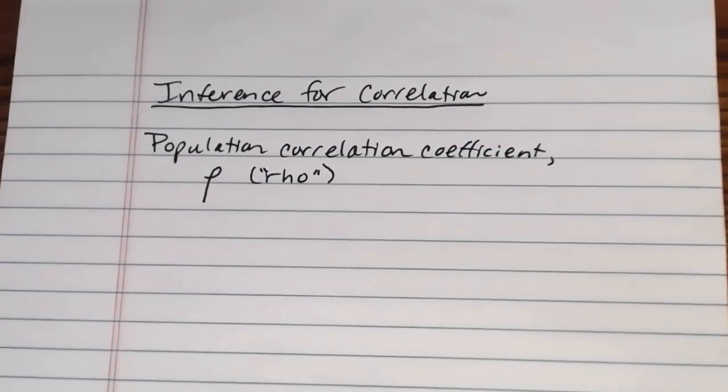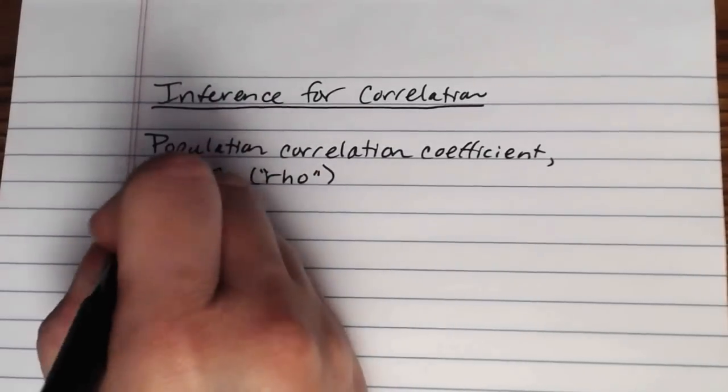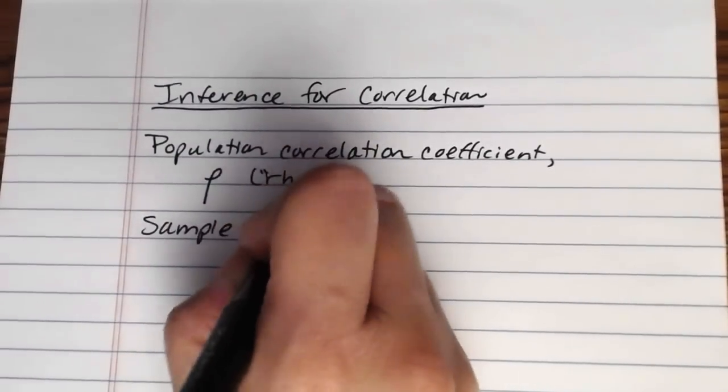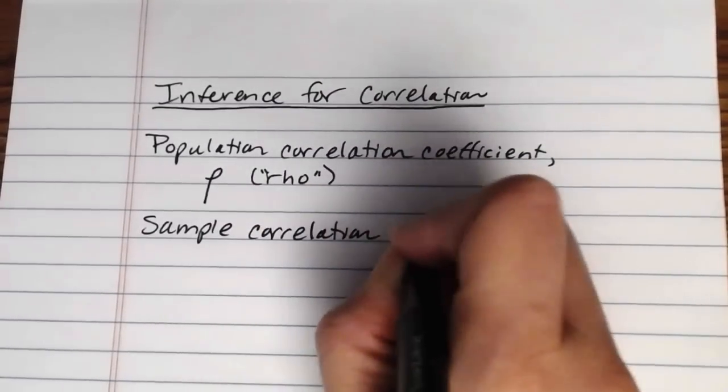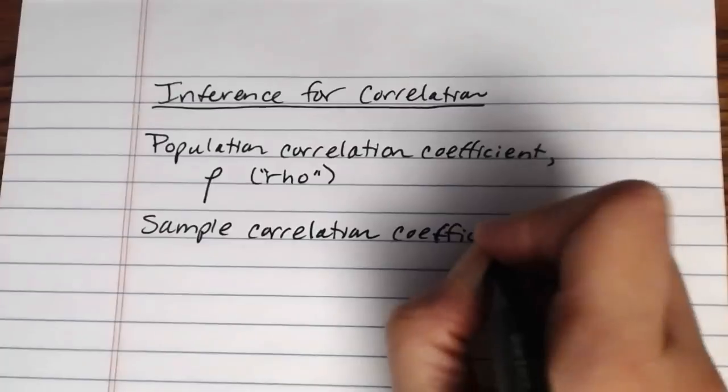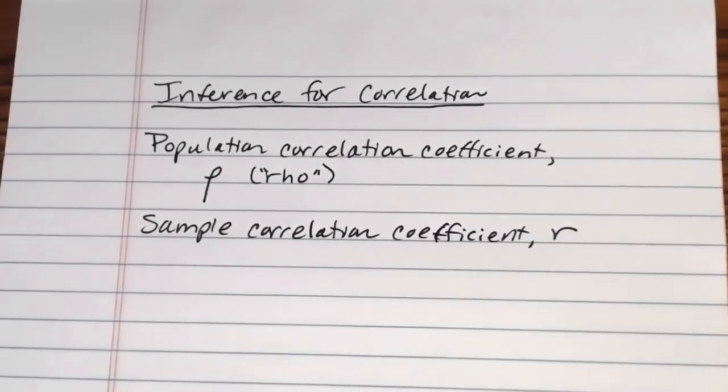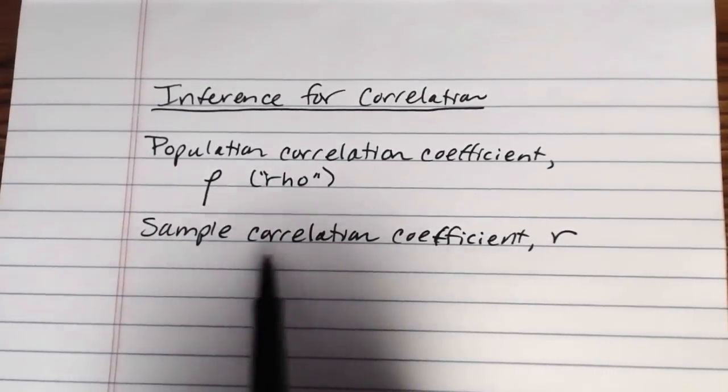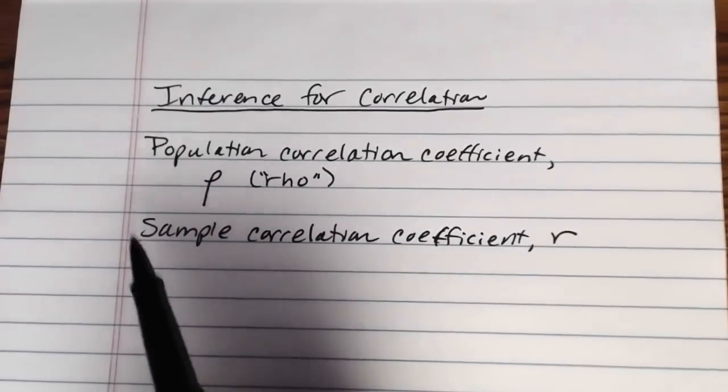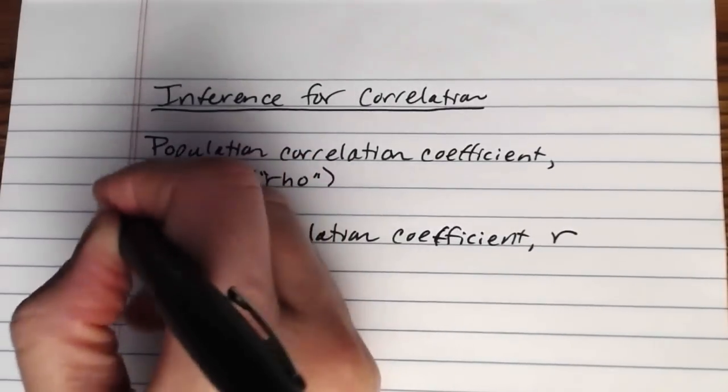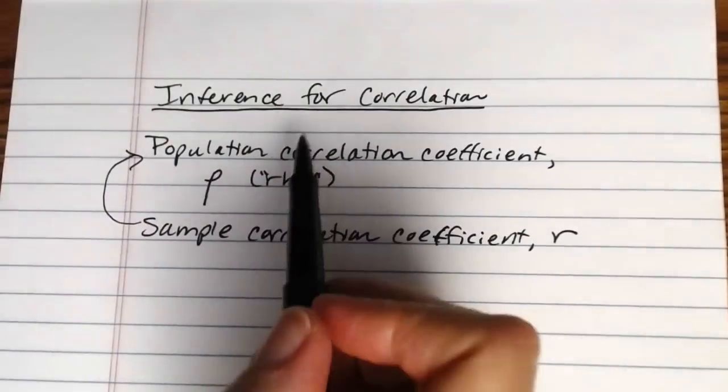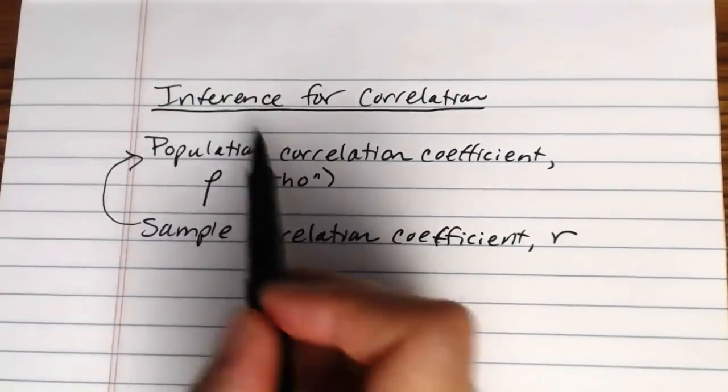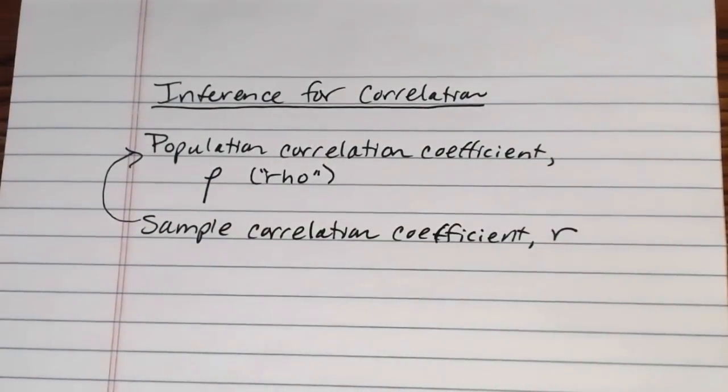And rho is the population correlation coefficient. So far we've been dealing with the sample correlation coefficient, which is the lowercase English letter r. We've been able to examine whether a set of sample data appears to be correlated. From there we might reasonably want to know, is it reasonable to assume that there is a correlation between the x and y variables in the larger population, rather than just the sample.